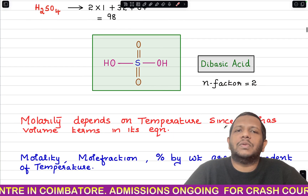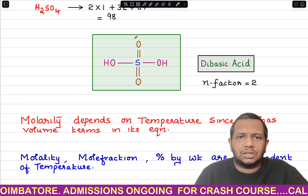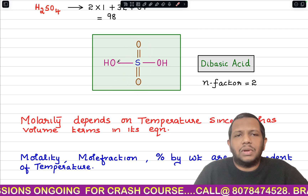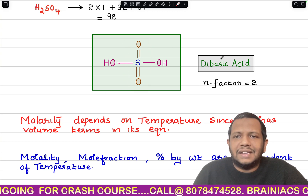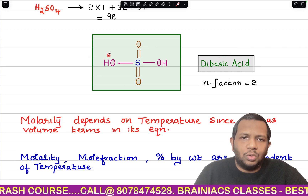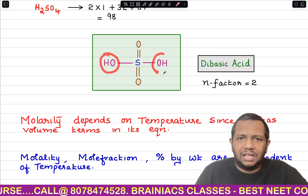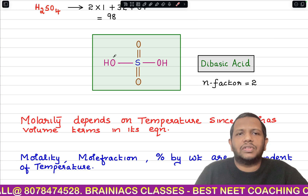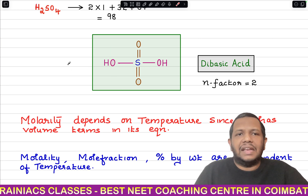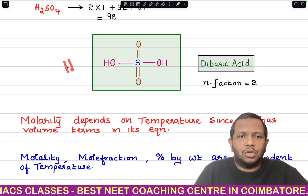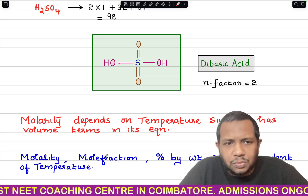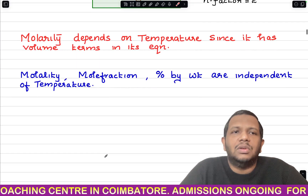Two important things to know about sulfuric acid: H₂SO₄ is a dibasic acid because the two hydrogen atoms connected to oxygen atoms are ionizable — they can be broken off and liberated as H⁺ ions. So one molecule of H₂SO₄ can give rise to 2H⁺.